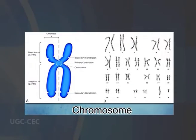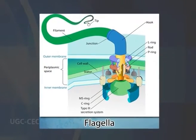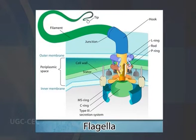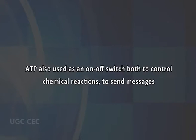A major role of ATP is in chemical work, supplying the needed energy to synthesize the many thousands of types of macromolecules that the cell needs to exist. ATP is also used as an on-off switch both to control chemical reactions and to send messages.